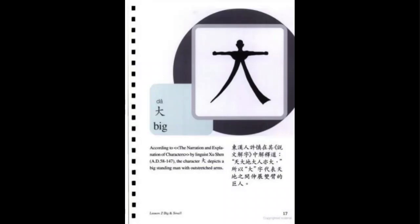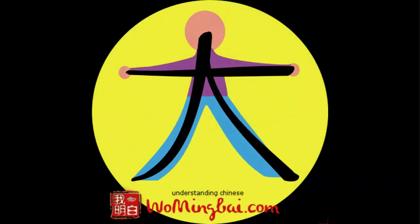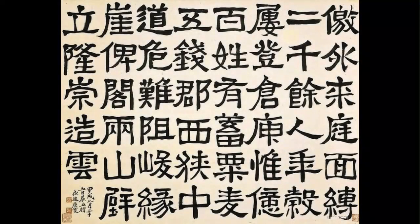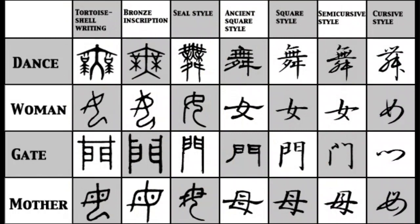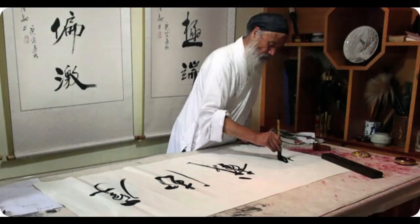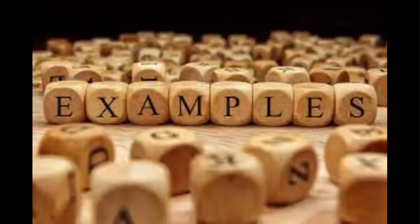In the case of 大 (dà), you can see there is a resemblance to a person with outstretched arms, representing something big. This makes the character easy to learn. Chinese writing is different from most languages because it is logographic, not phonographic. This means each character represents a meaningful element and not a particular sound. Although this is why Chinese is hard to learn, it is also what makes it special and pleasing in its own way. Now let's see some examples.